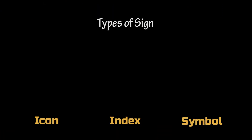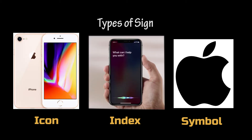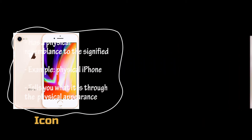A physical object is the signifier while the psychological concept is the signified. There are three types of signs: icon, index, and symbol. I will be using the iPhone as our example. An icon usually has a physical resemblance to the signified, or the object being represented. A physical iPhone is an example of an icon — it tells you what it is through its physical appearance.